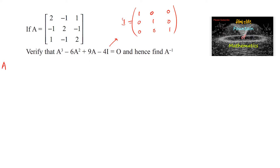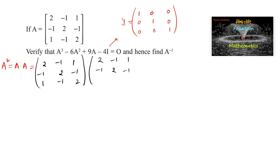Let's find A², which is A×A. We multiply [2, -1, 1; -1, 2, -1; 1, -1, 2] by itself. First row with first column: 2×2=4, 4+1=5, 5+1=6. First row with second column: -2, -2-4=-6, -6+1=-5. First row with third column: 2+1=3, 3+2=5.